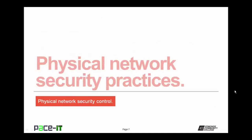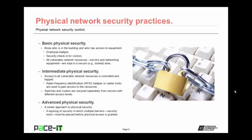Let's move on to physical network security practices. Basic physical security should include knowing who's in the building and who has access to equipment — you can do that through employee badges. Security check-in should be implemented for all visitors. All vulnerable network resources, such as servers and networking equipment, should be kept in a secure area. Then there's intermediate physical security, where access to all vulnerable network resources is controlled and logged. One way to implement this is to use RFID badges to gain access to network resources, or you could implement cipher locks that people have to punch in a code to unlock the door. Another step is the separation of resources — switches and routers secured separately from servers with different access levels.